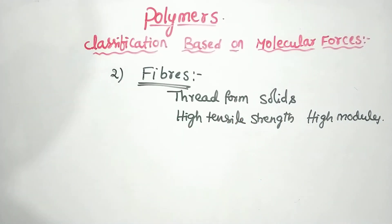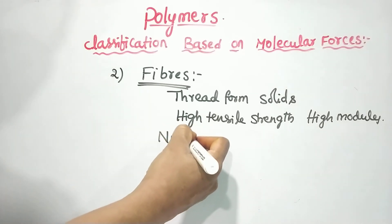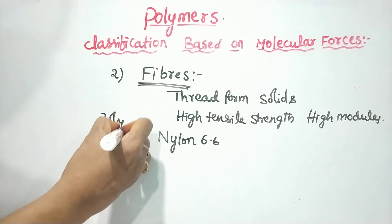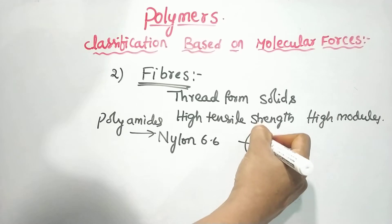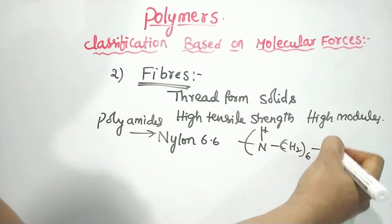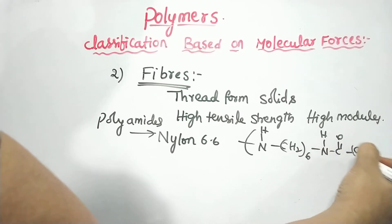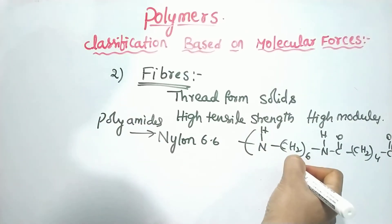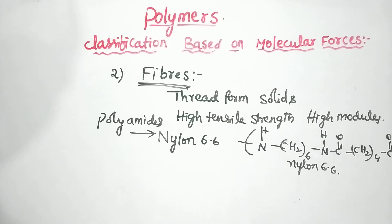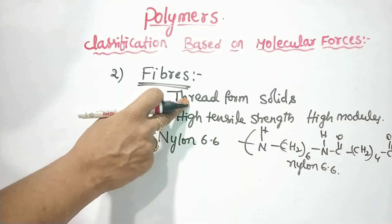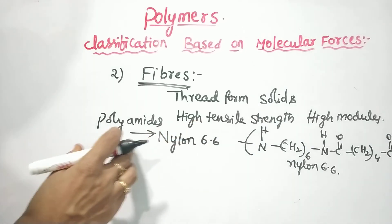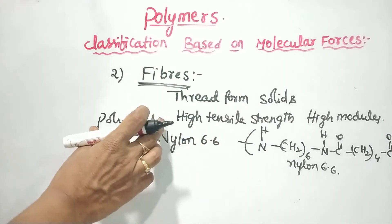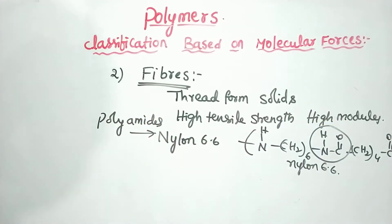An example of fibers is nylon 6-6. Nylon 6-6 is a polyamide. Its structure is: N-H, (CH2)6, N-H, C=O, (CH2)4, C=O, taken N times. Fibers are thread-forming solids with high tensile strength, high modulus, and close packing of chains. Nylon 6-6 is the key example of polyamides.